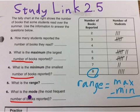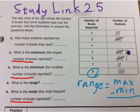And finally, the mode — the most frequent number of books reported. So which number of books was reported by the most number of students? Find the most number of students, match that up to the number of books, and that is going to be your mode.